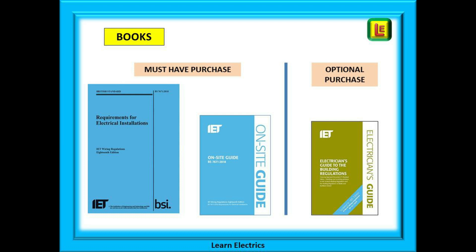Notice that all three main books are either blue or have a blue stripe on them — this indicates they are the current 18th Edition version. Any other colour and the books are of no use to you and will not be accepted by the assessor.